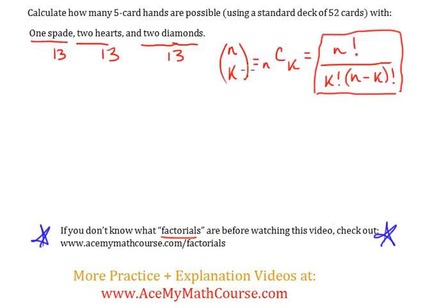So, we're dealing with combinations here. From the 13 spades, we're choosing one of them. So, 13 combination 1. We also want 2 hearts, so we want 1 spade and 2 hearts. And the 'and' will be represented by multiplication, in this case. So, from 13 cards that are hearts, we're gonna choose 2 of them. So, 13 combination 2.